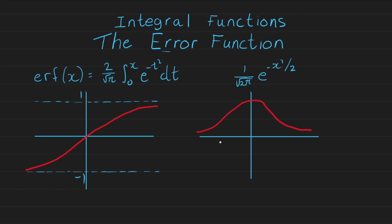People would take the errors and see how they coalesce or congregate around certain values, specifically around the mean. When we plot how these errors are distributed around certain ranges we get this curve on the right-hand side, which can be described by the Gaussian distribution equation. Integrating the Gaussian distribution gives us something that looks like the error function.